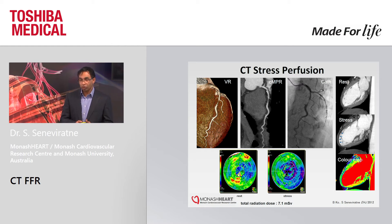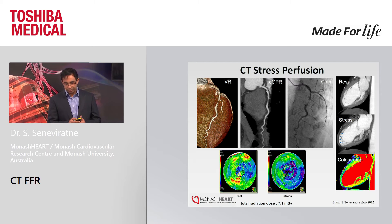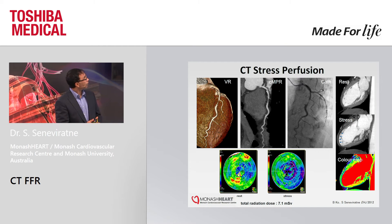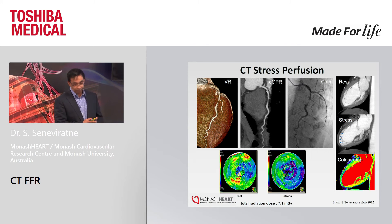The first technique to evolve was CT stress perfusion. The initial work was done by Dr. Rich George from Johns Hopkins, and it's relatively easy to do — pretty much repeating your cardiac CT using adenosine or a similar stress agent and then looking for any ischemia in the myocardium. In this example, a proximal LAD stenosis in a 53-year-old female: on the top left-hand corner is the normal myocardium at rest, and below that is under stress, showing anterior wall attenuation defect indicating LAD territory ischemia. Toshiba has also developed software showing a similar kind of effect.